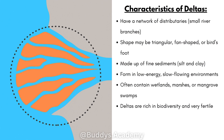So what are some characteristics of deltas? Deltas are going to have a network of distributaries — these are small river branches. Their shape may be triangular, fan-shaped or a bird's foot. Deltas are made up of fine sediments like silt and clay, and they form in low energy, slow-flowing environments. Deltas often contain wetlands, marshes or mangrove swamps, and they are rich in biodiversity and can be very fertile.